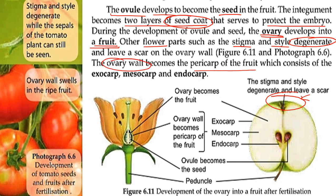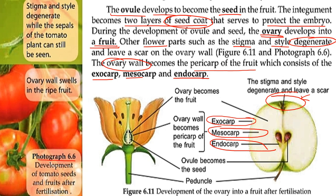The pericarp consists of the exocarp (outer layer), the mesocarp (middle layer), and the endocarp (innermost layer). This is the development of the ovary into fruit after fertilization, as shown in figure 6.6: development of tomato seeds and fruits.